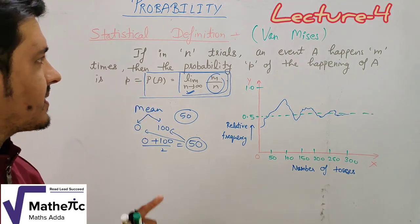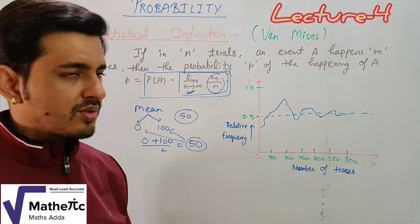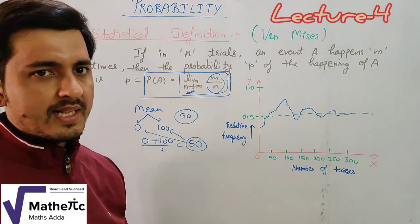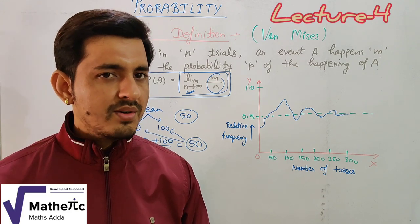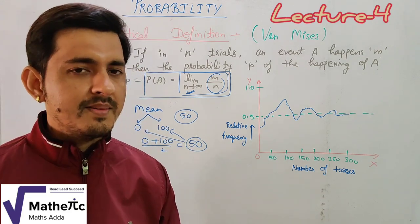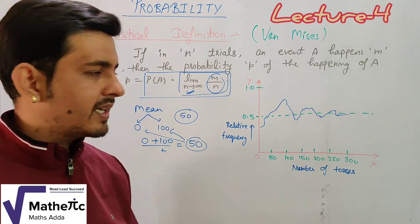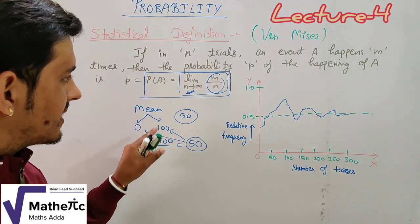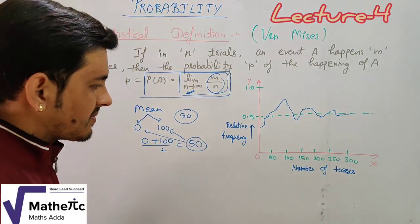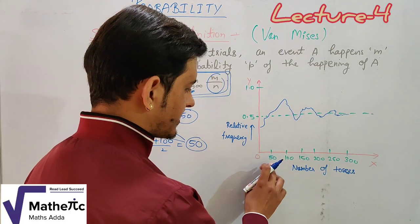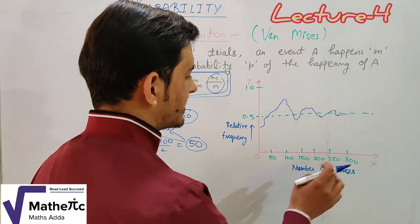The statistical definition of probability tells us that when the number of trials is very large, the probability estimate becomes quite accurate. For example, if we toss a coin, the probability of head or tail is classically one-half. We can verify this using a graph where the number of tosses goes from 50, 100, 150, 200, 250, to 300.